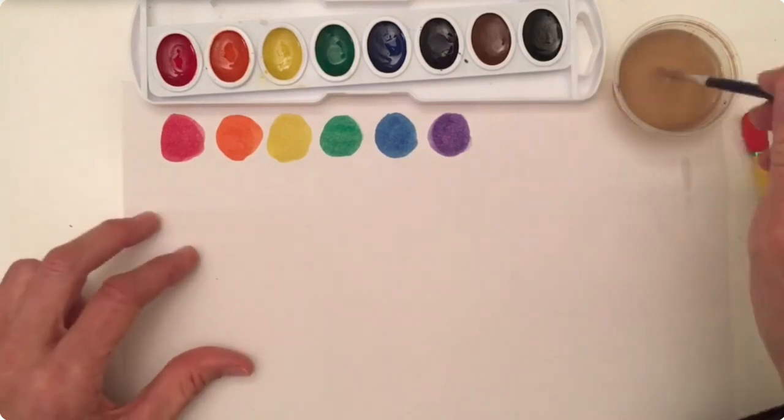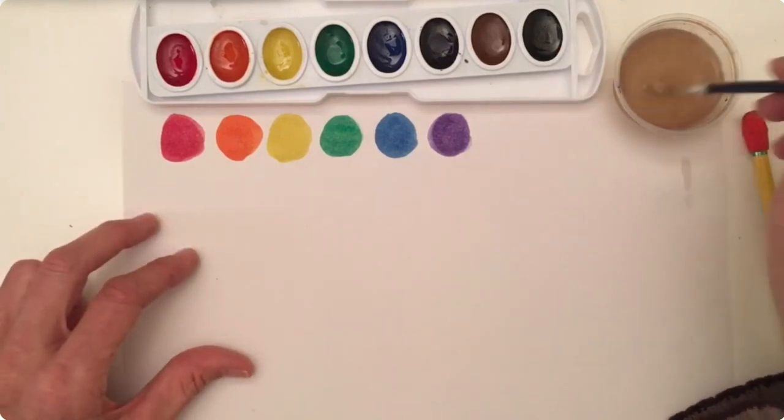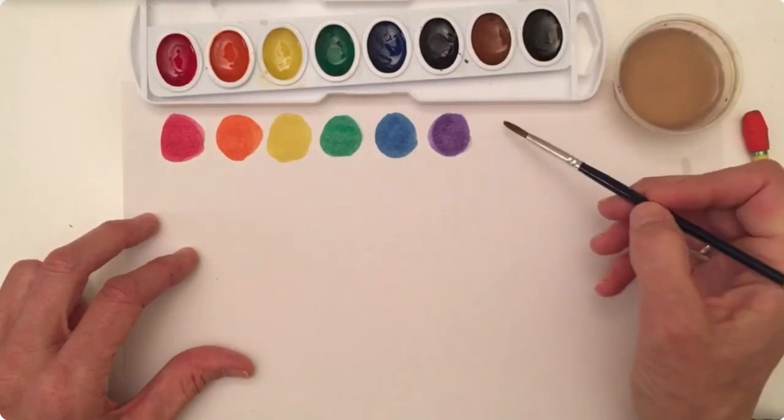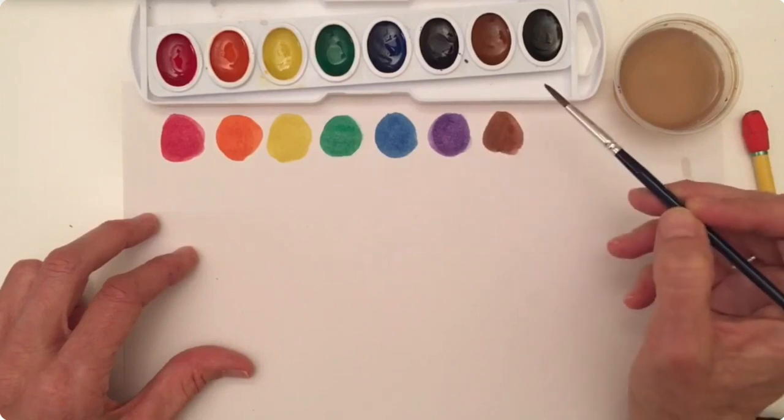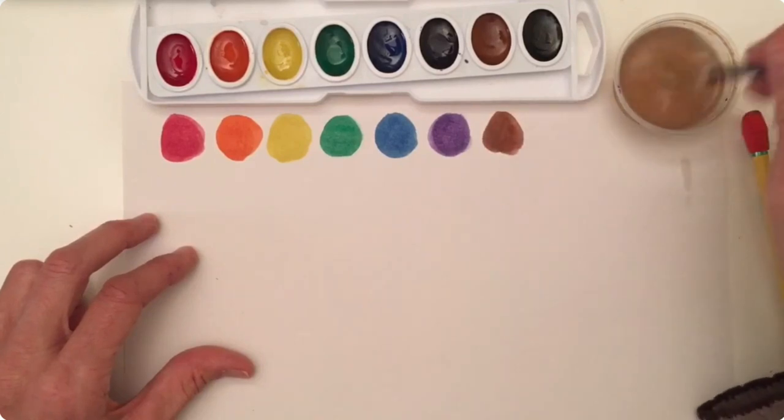Oh, hey, we still have two more colors to go. Let's get some water with our clean brush and we activate our brown. And we can make a brown circle. Now I'm going to clean, clean, clean, clean.